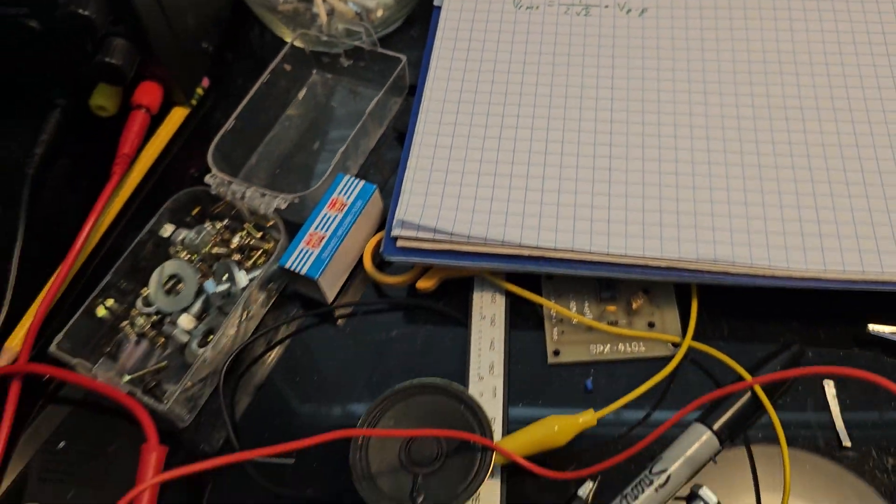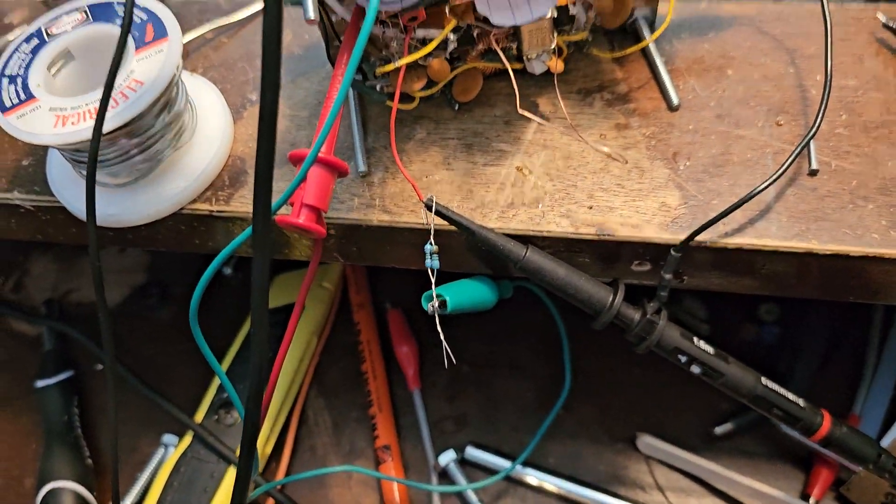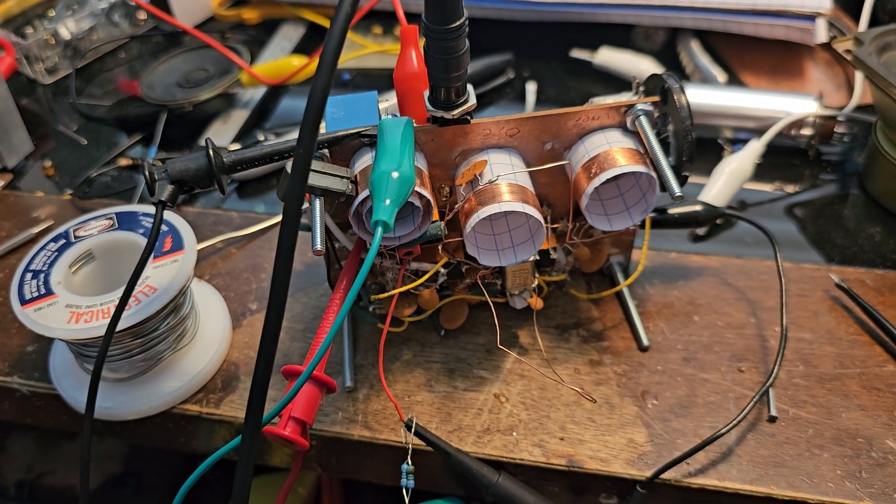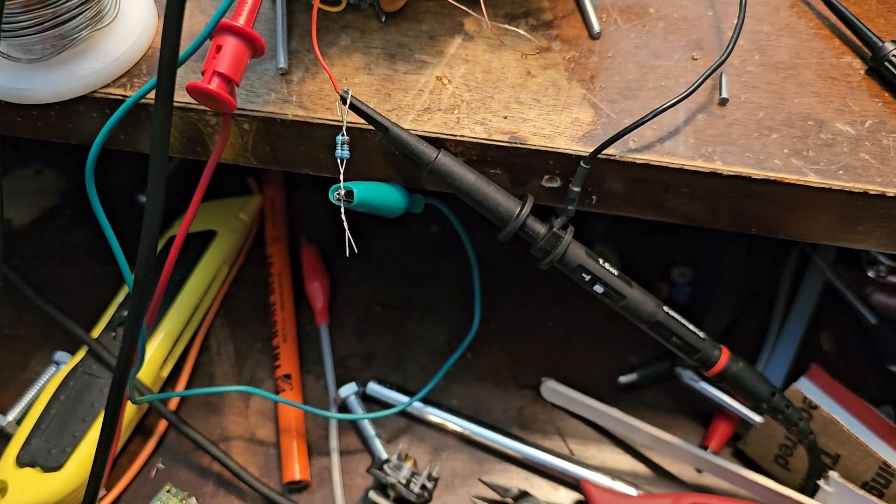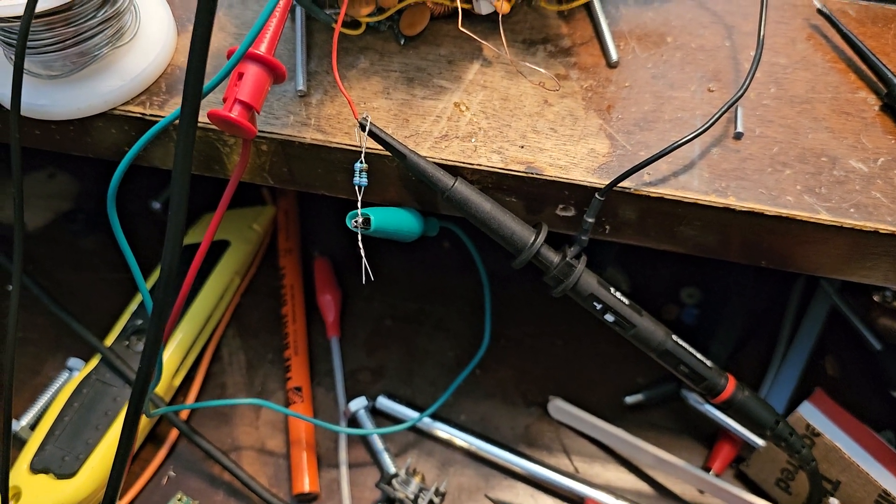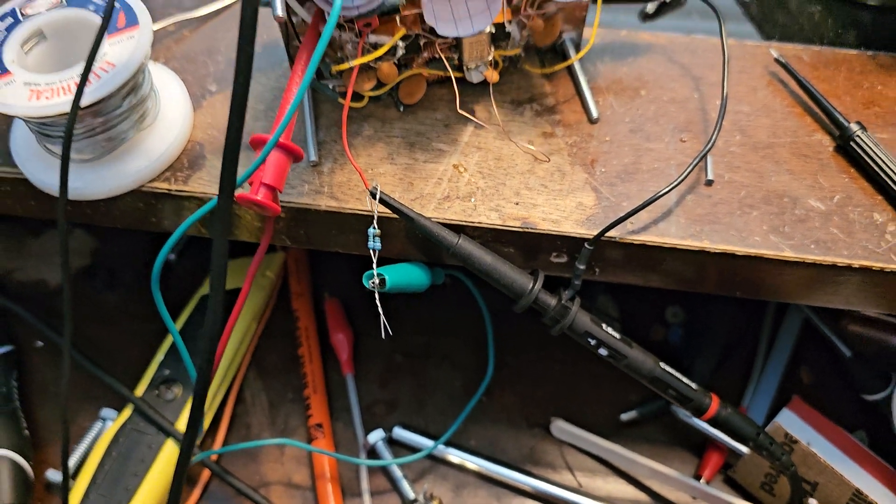So let's see this in actual action. 50 ohm resistor and then an RF generator, and the oscilloscope is measuring the voltage across the resistor. So let's look at this.